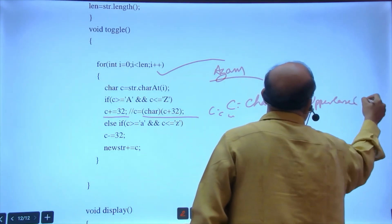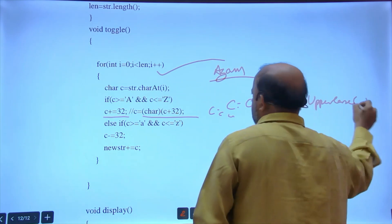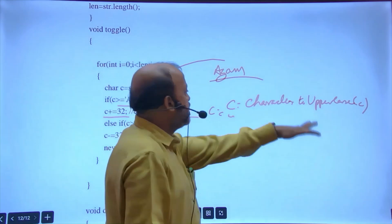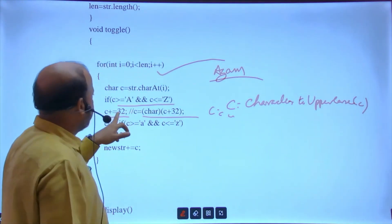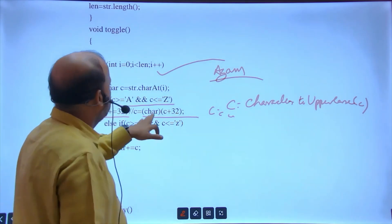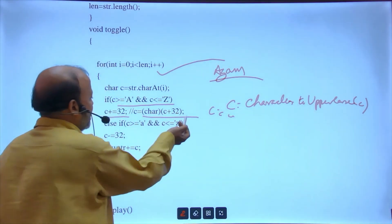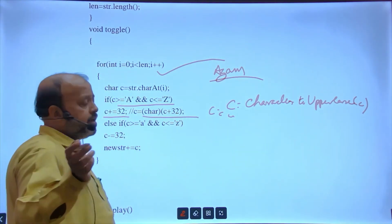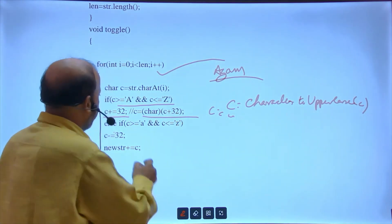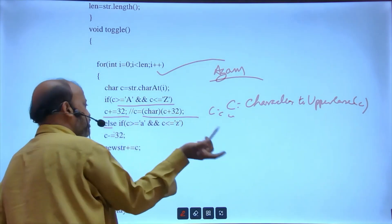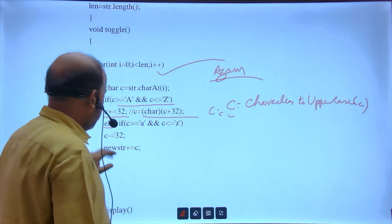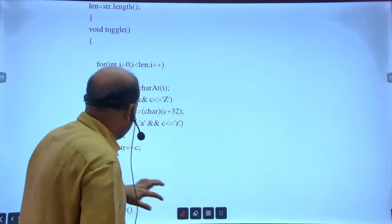Next: read word using scanner. Follow the question: length, input, whatever question is told you need to follow that. Now in toggle is the main work. Here loop till the length, charAt(i) will extract each and every character. Suppose my name: first character you'll get A, A is capital. Either you use c plus equals 32, or you have another method: Character.toUpperCase.